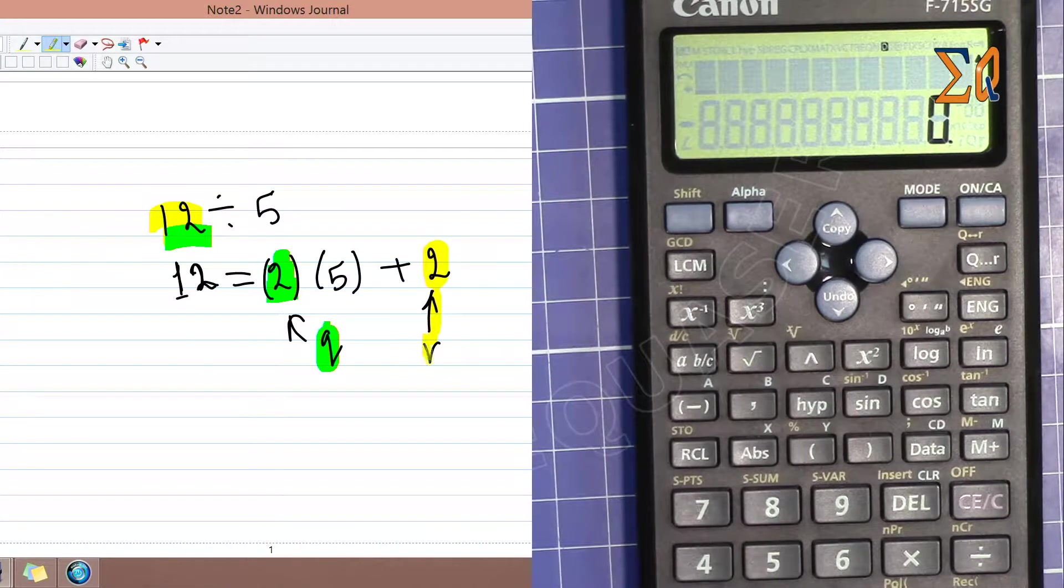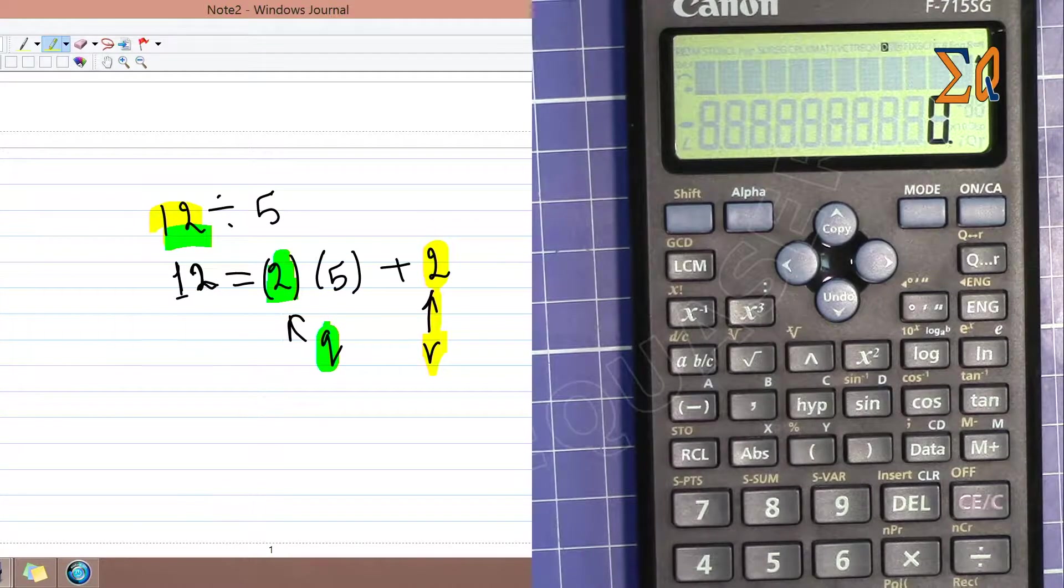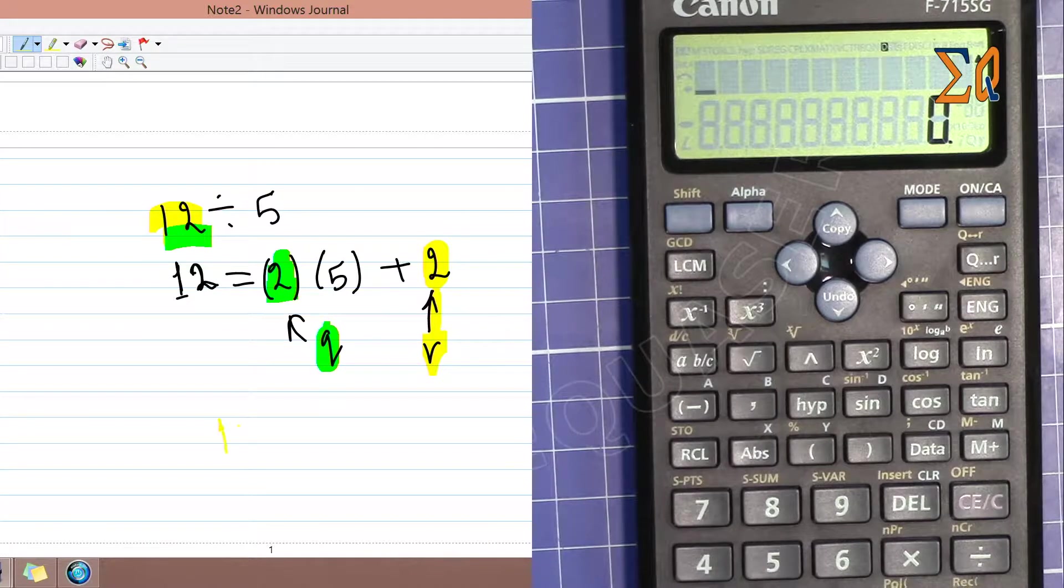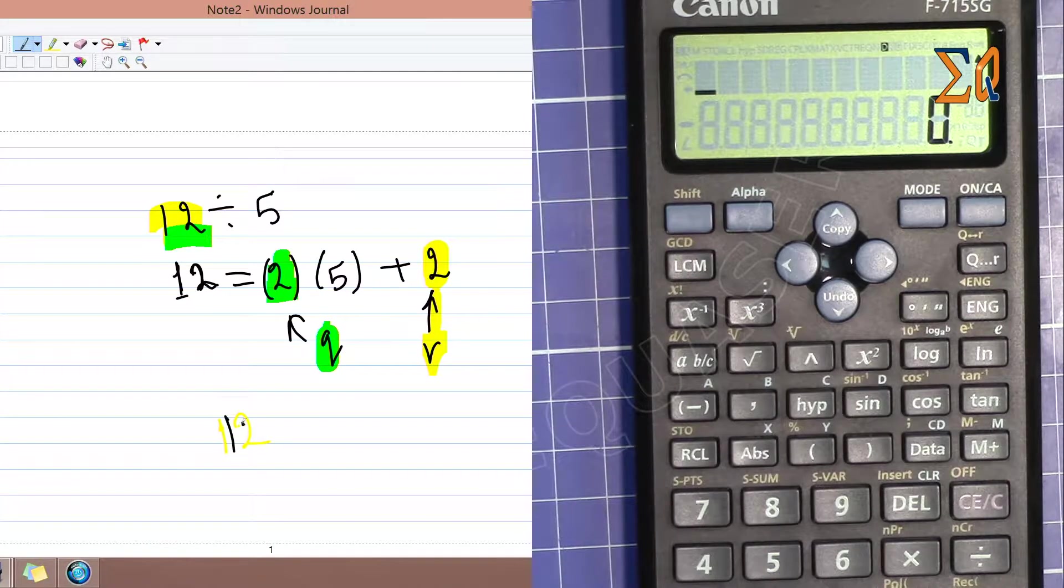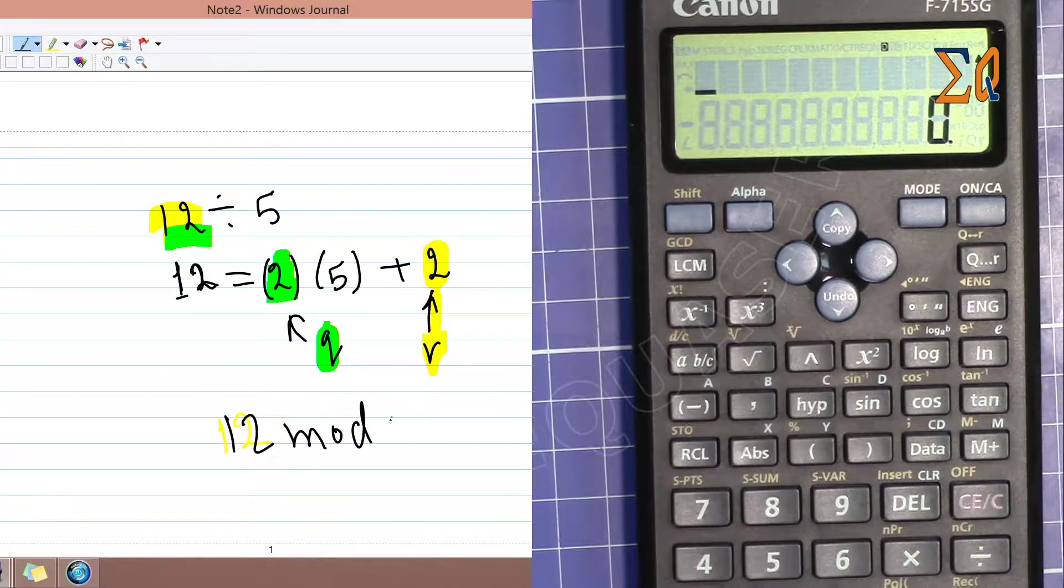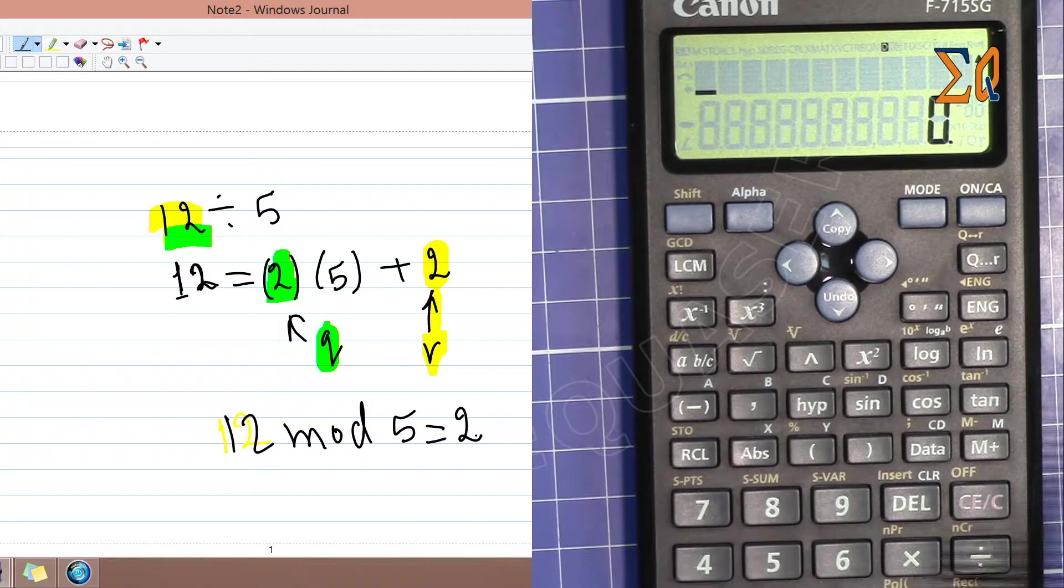The 2 is our R, which is the remainder. In programming and discrete math, if you want just the remainder, we say 12 modulus 5, or sometimes people say mod. 12 modulus 5 equals 2. Let's see how we can do it on the calculator.